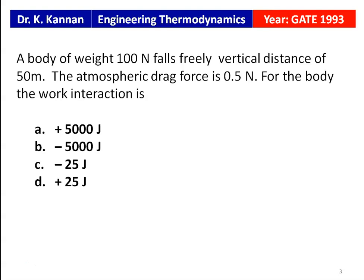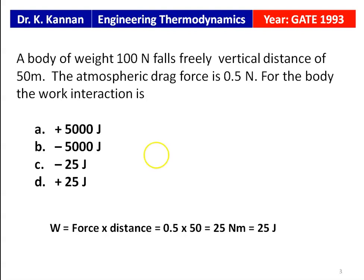A body of 800 Newton falls freely a vertical distance of 50 meters. The atmospheric drag force is 0.5 Newton. The work interaction is: work equals force into distance. The drag force is 0.5 Newton and the distance travelled is 50 meters. So the work interaction is 0.5 × 50 = 25 Newton-meters, or 25 joules.